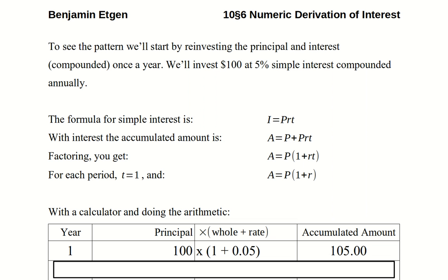Welcome to section 6 in chapter 10. This is a numeric derivation of the formula for interest, and we're going to talk about continuous compounding as well.